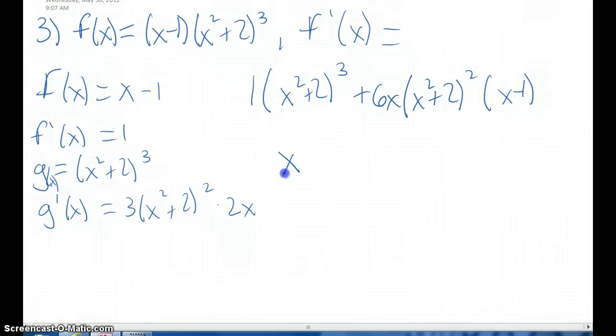Next, we factor out the x squared plus 2 squared. So we get x squared plus 2 plus 6x times x minus 1.